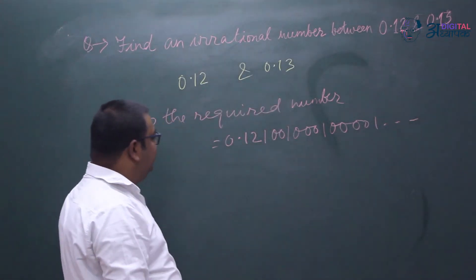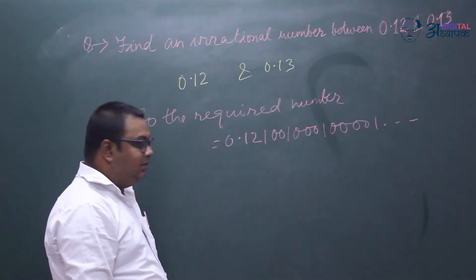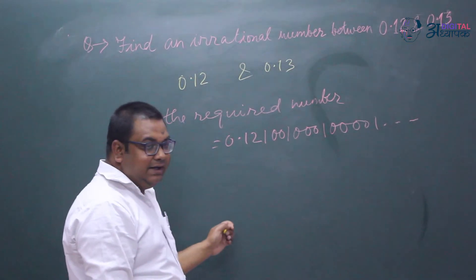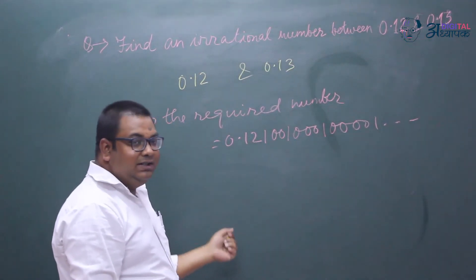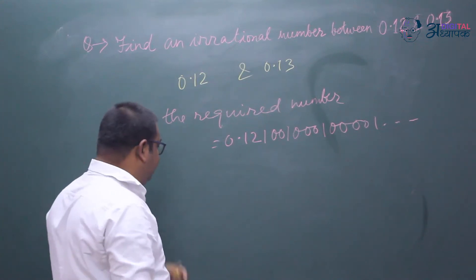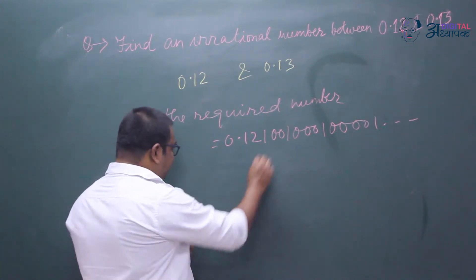But it is not needed that you always take 1 or always take 0. You can take any numbers. The only thing we have to do is make it a non-terminating, non-repeating decimal, and this is your answer.